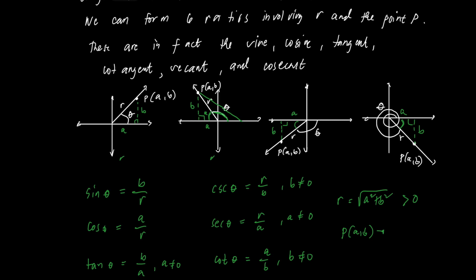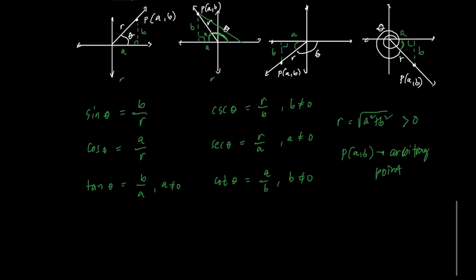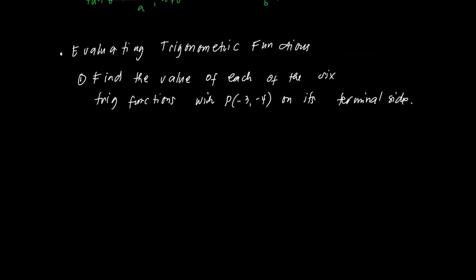The point AB is an arbitrary point. Using this definition, we will be able to solve the values of the six trigonometric functions where P is given. Example: find the value of each of the six trig functions with P having coordinates negative 3 and negative 4 on the terminal side. Since X is negative and Y is negative, this point is located in the third quadrant, so the terminal side of the angle is in the third quadrant.